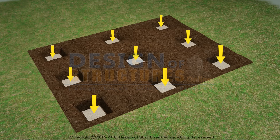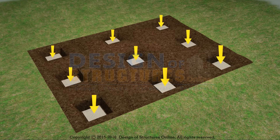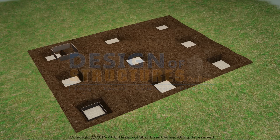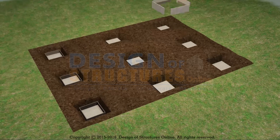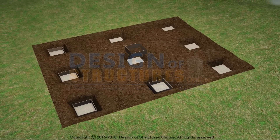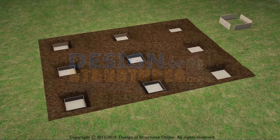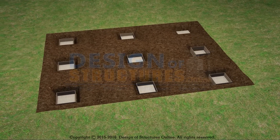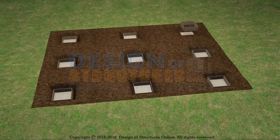PCC. After the excavation, the surface is leveled and PCC is poured over the leveled surface. Foundation shuttering arrangement is then made. Once PCC is done, shuttering for the foundation is placed. It should be strong enough to withstand all types of dead and live loads.